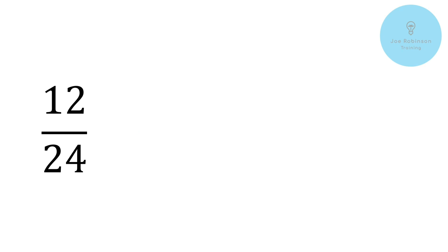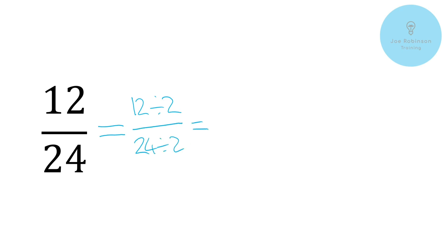Now if you remember from the previous video, I said the best thing that you can do when you're simplifying is rather than worrying about the greatest common factor or anything like that, just keep it nice and simple and start small. So think of the smallest number that both of these will divide by without leaving any remainder. In this case, we're going to ask: will both of these numbers divide by two? Well, they're both even, so they must do. So let's do that — 12 divided by two and 24 divided by two. So 12 divided by two gives us six, and 24 divided by two gives us 12.